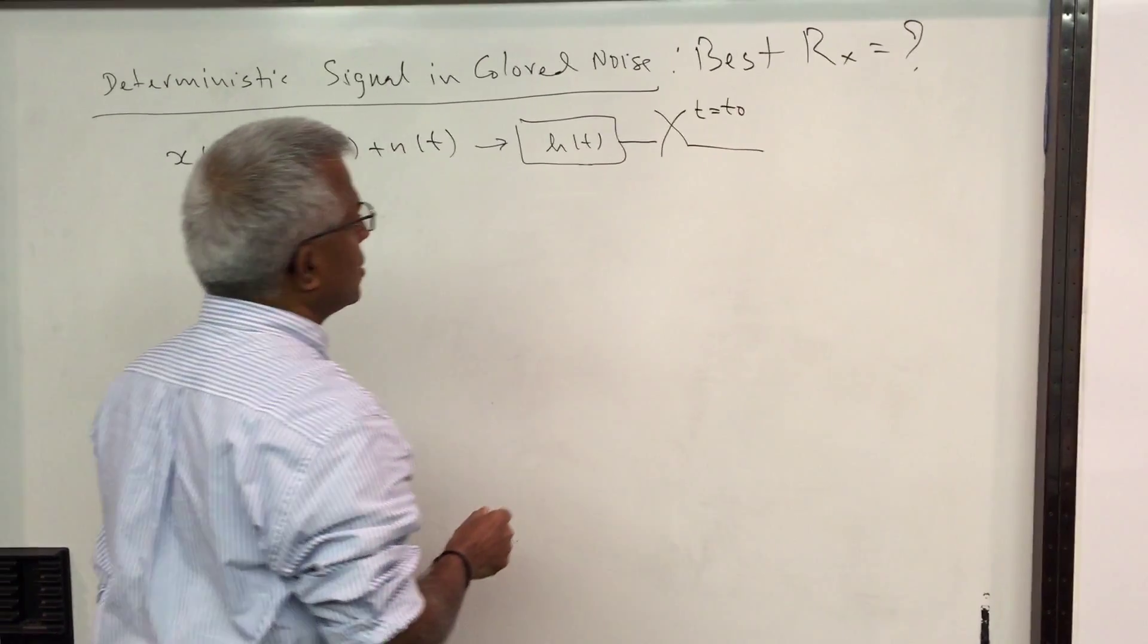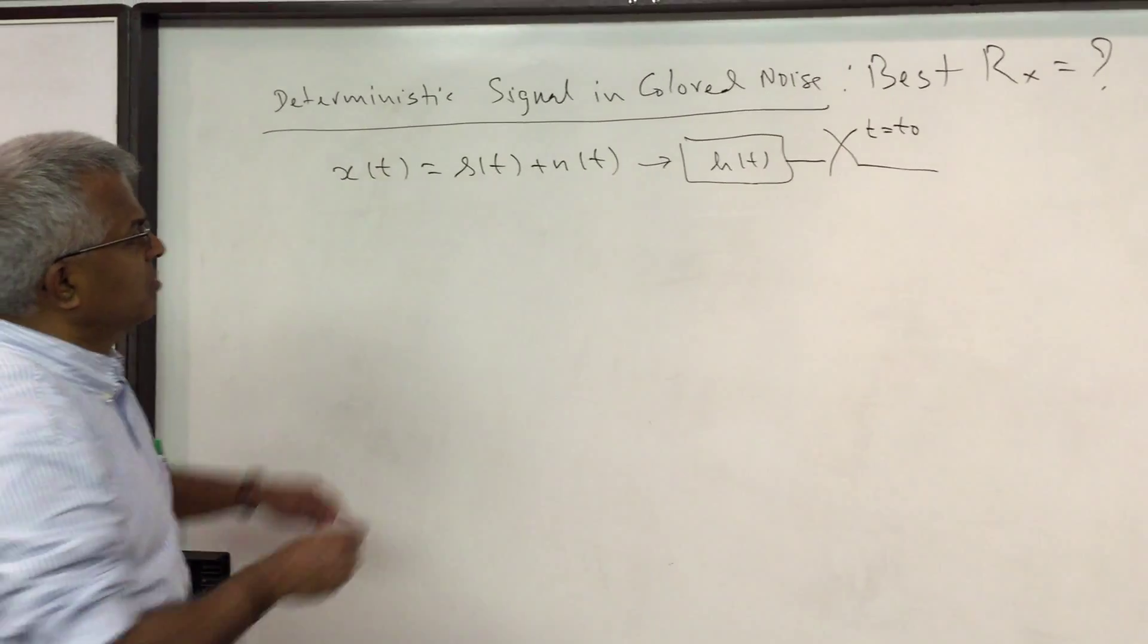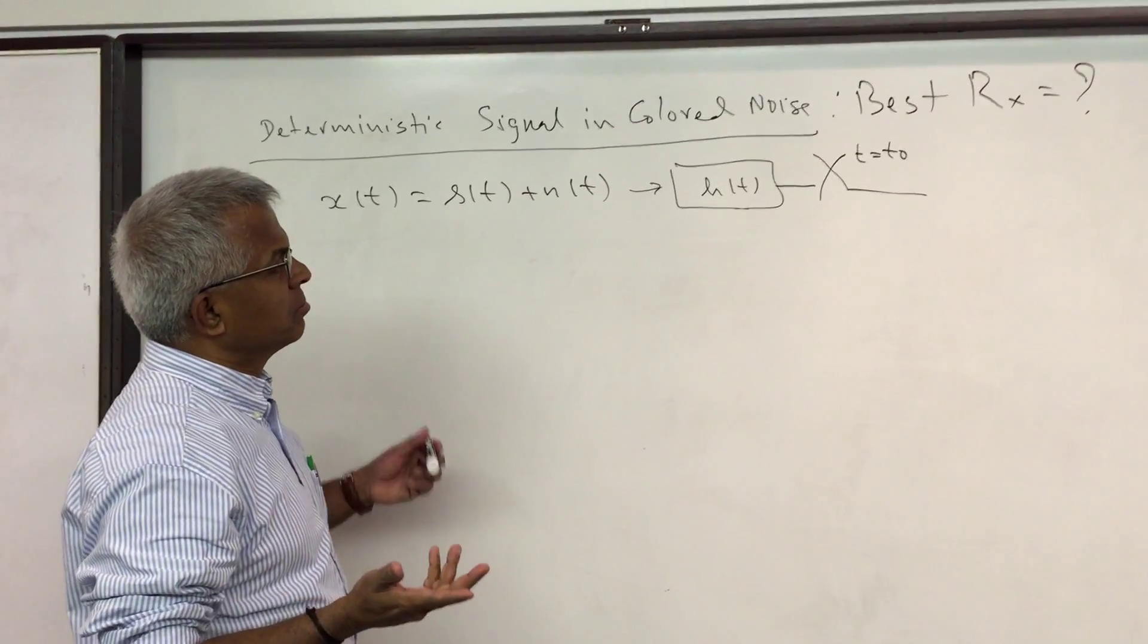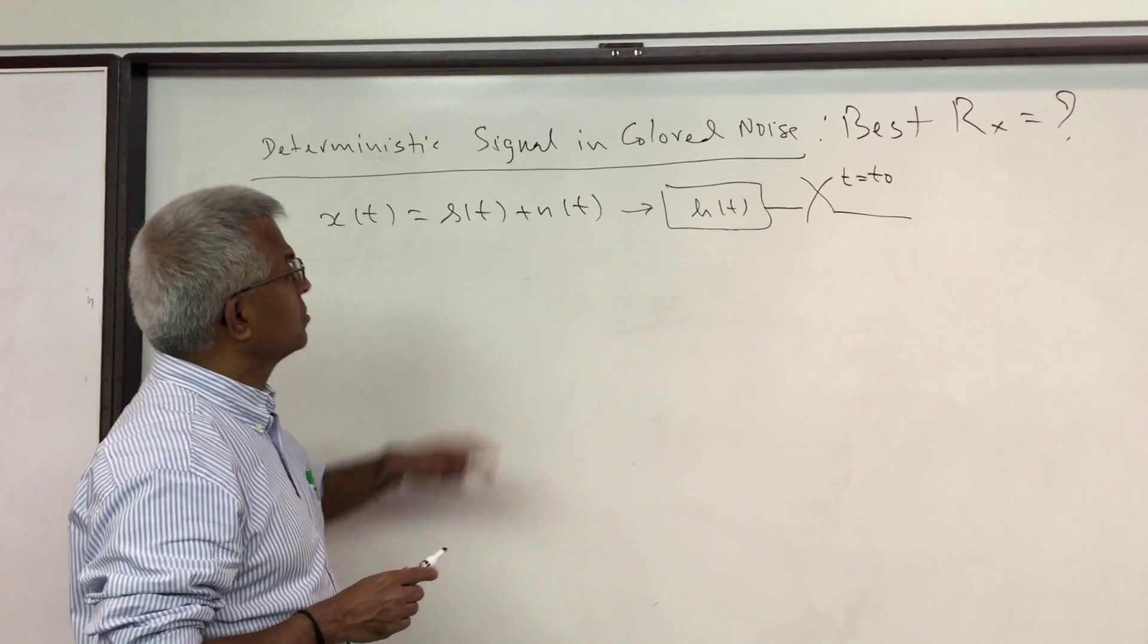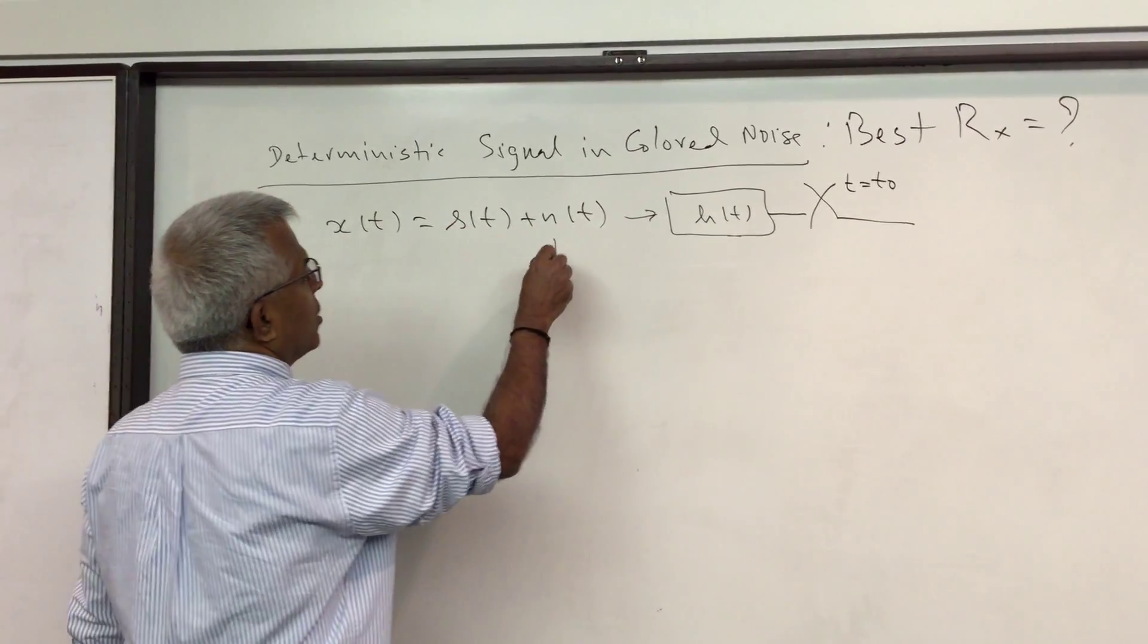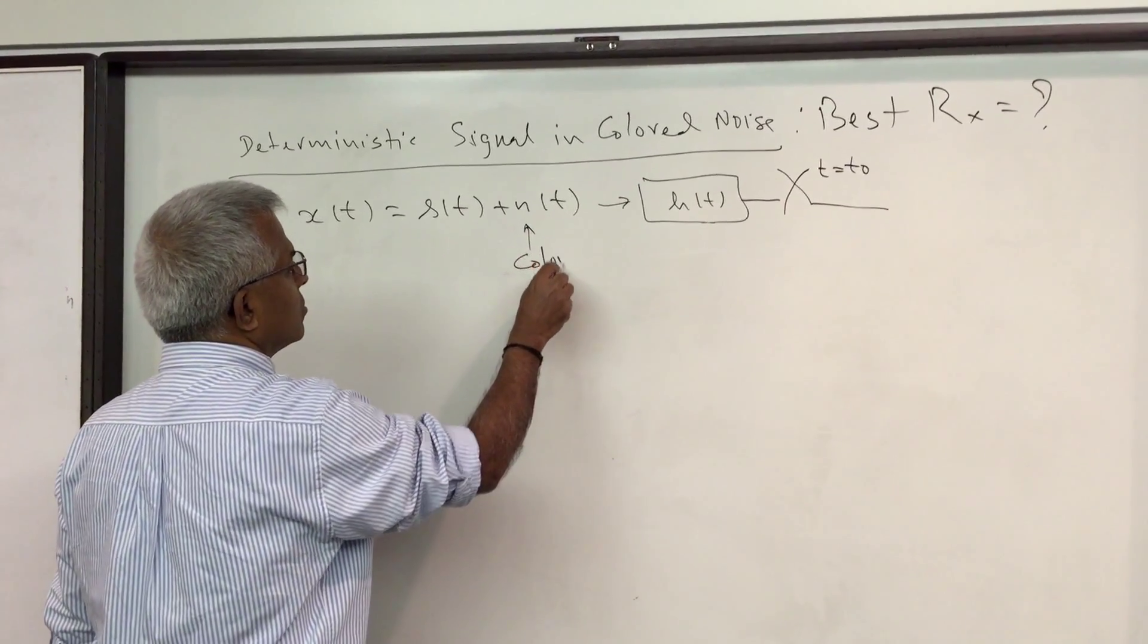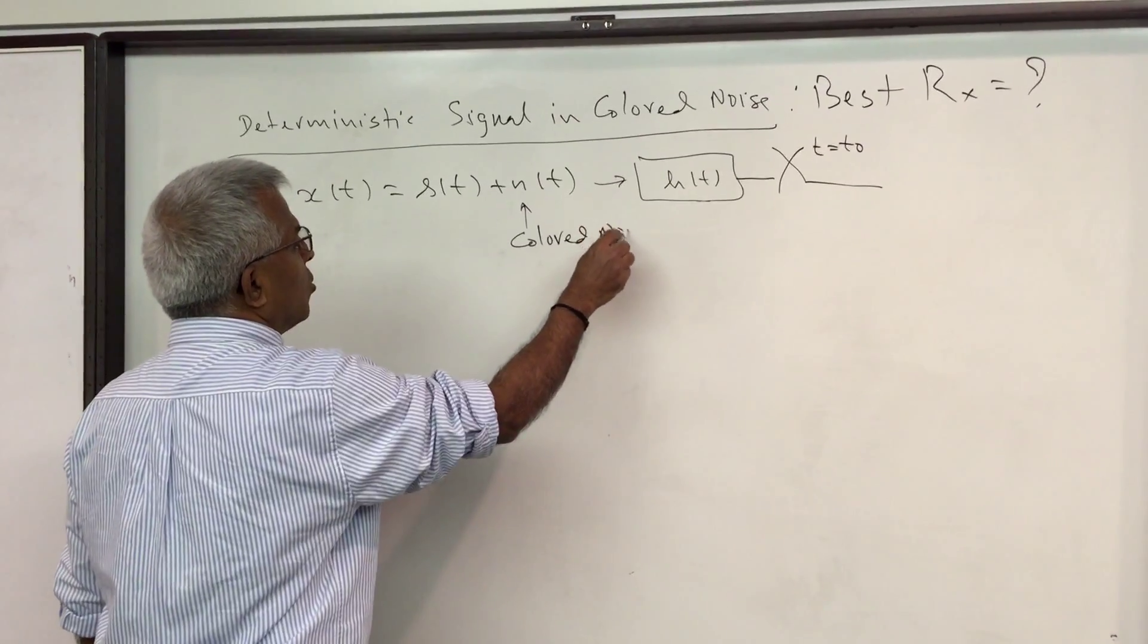So of course if this noise has been white noise we have gone through this - the answer is the matched filter matched to this signal. But here it is colored noise.